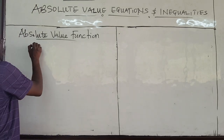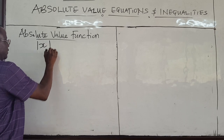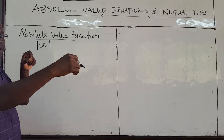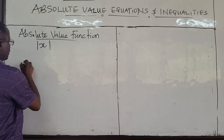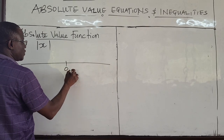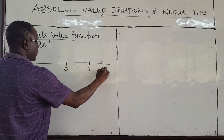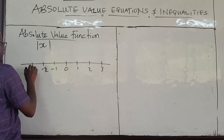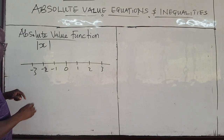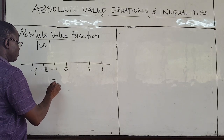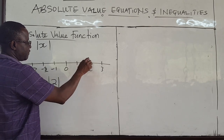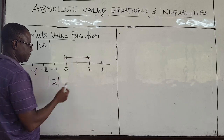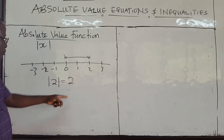So what is the absolute value of a real number x? Well, the absolute value of any real number is the distance from the number to zero on the number line. So if you have a number line with zero here, one, two, three, and so on, negative one, negative two, negative three — then the absolute value of two means the distance from two to zero. The absolute value of two is equal to two.